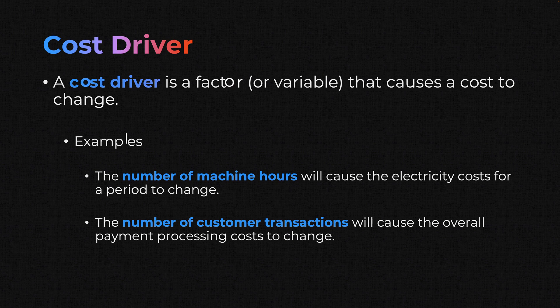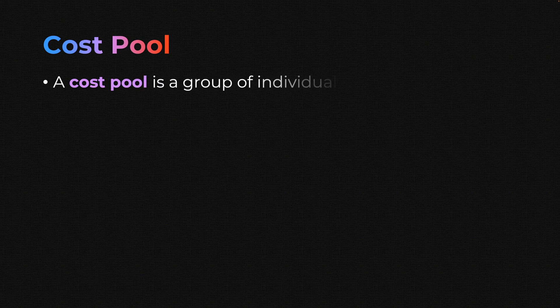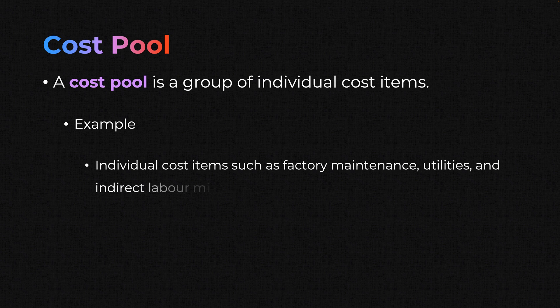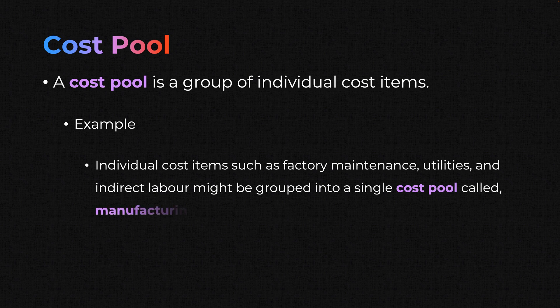A cost pool is a group of individual cost items all lumped together. For example, individual cost items such as factory maintenance, utilities, and indirect labor might all be grouped into a single cost pool called manufacturing overhead.